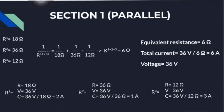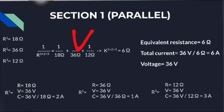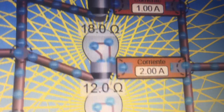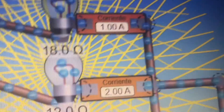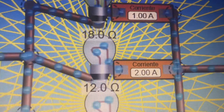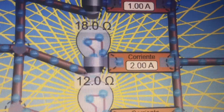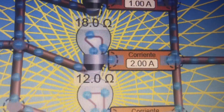But the current is going to change for each resistance. In order to calculate the current of each resistance we have to divide the voltage by the resistance. For the first resistance we divide 36 volts by 18 ohms, which gives us 2 amperes. The simulation confirms the 18-ohm resistance generates a current of 2 amperes.